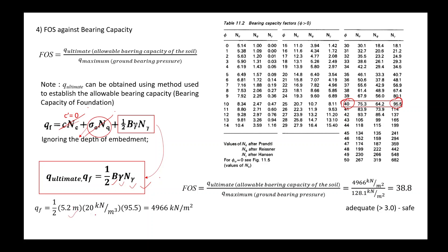With B = 5.2 and unit weight gamma = 20, we can calculate q_ultimate or q_allowable. Dividing q_allowable by q_max gives the factor of safety for bearing capacity. The minimum required FOS is 3. If FOS exceeds 3, the design is safe — meaning q_max is less than q_allowable.